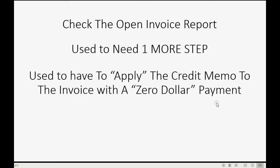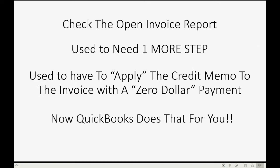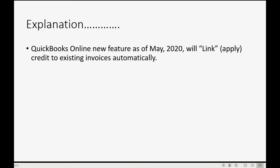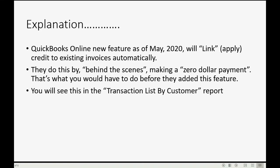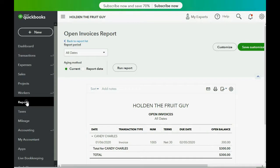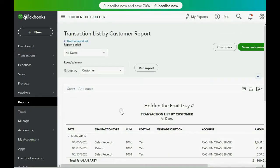It used to be that you needed to do one more step after you created a credit memo — you used to have to apply the credit memo to the invoice by making something called a zero dollar payment. QuickBooks Online now has a new feature as of May 2020 that links the credit memo you just made to existing invoices automatically, by behind the scenes making what's called a zero dollar payment. You will see this zero dollar payment in the transaction list by customer.